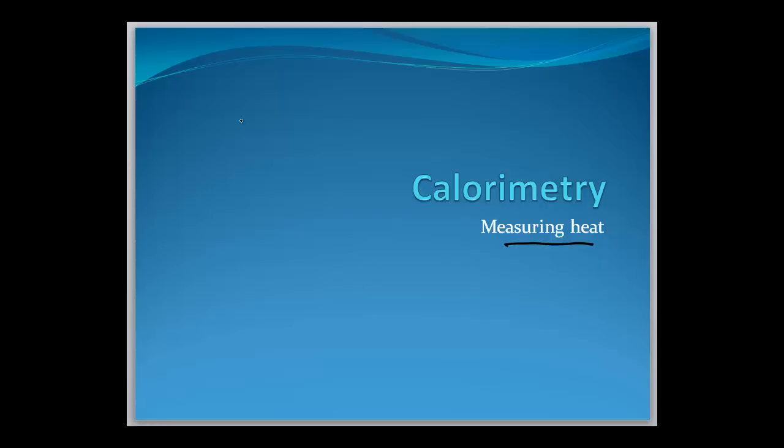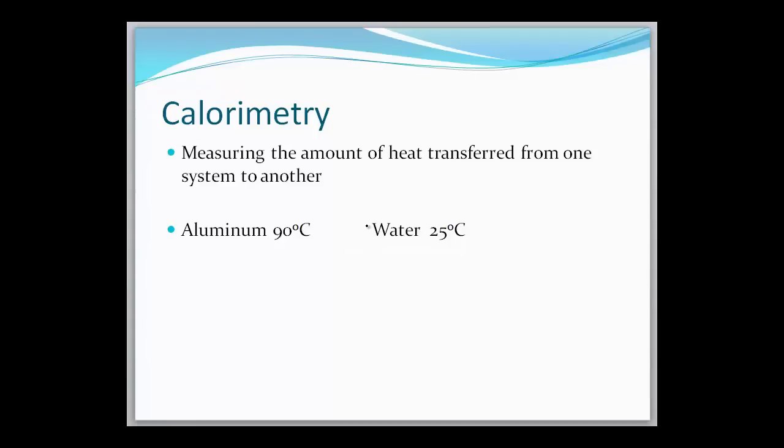And these are all going to be physical transfers. So let's say, for example, we had a beaker of water at 25 degrees Celsius, and let's just say it's 100 grams of water. What we're going to do is calculate what would happen if we took a 50 gram piece of aluminum at 90 degrees Celsius and put it in the water. And we could calculate a number of things. We could calculate what the final temperature would be, we could calculate what the specific heat of the aluminum would be, etc.